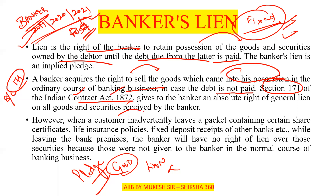However, when a customer inadvertently leaves a package containing share certificates, life insurance policies, fixed deposits of other banks, etc. while leaving the bank premises, the banker will have no right of lien over those securities, because they were not given to the banker in the normal course of banking business.